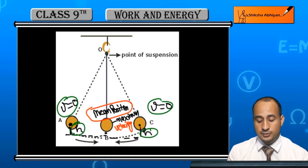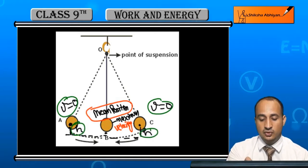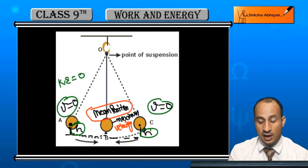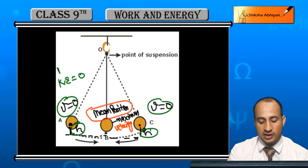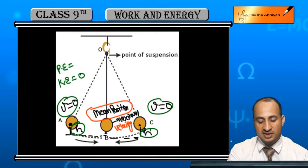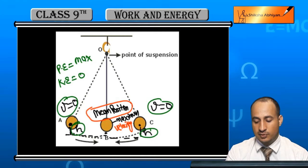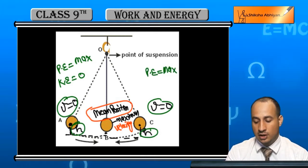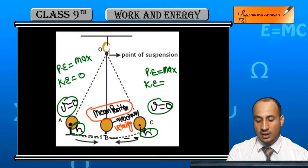When the velocity is 0 at the extreme position, the kinetic energy is 0. The height is maximum, so the potential energy is maximum. The extreme position is the maximum height position: kinetic energy is 0 but potential energy is maximum.